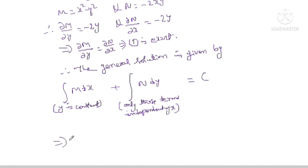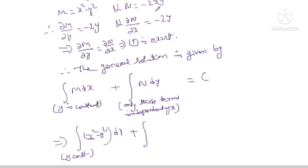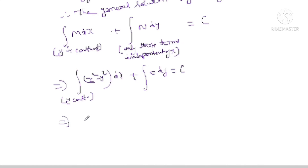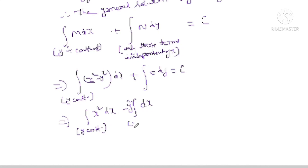M is x² - y², so the general solution is: integral of (x² - y²) dx with y constant, plus integral of N where we take only terms independent of x. Since there is no term in N = -2xy that is independent of x, that part contributes 0 dy = c.